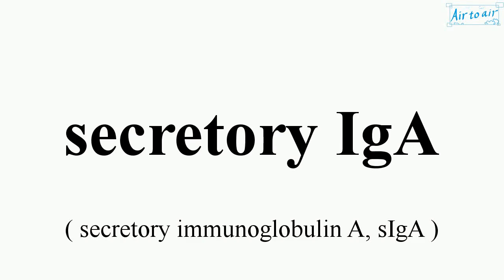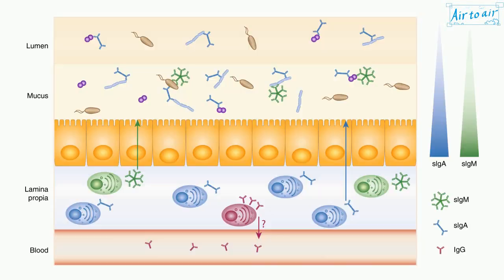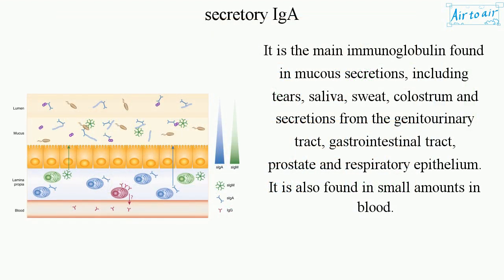Secretory IgA is the main immunoglobulin found in mucous secretions, including tears, saliva, sweat, colostrum, and secretions from the genitourinary tract, gastrointestinal tract, prostate, and respiratory epithelium. It is also found in small amounts in blood.